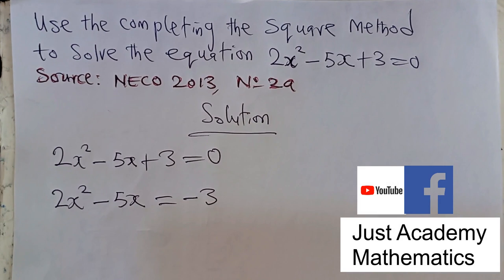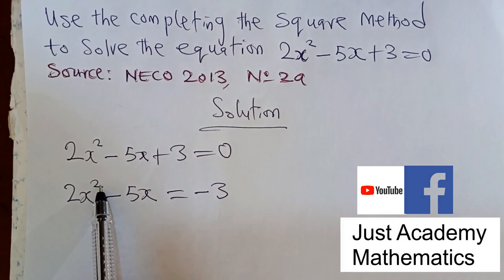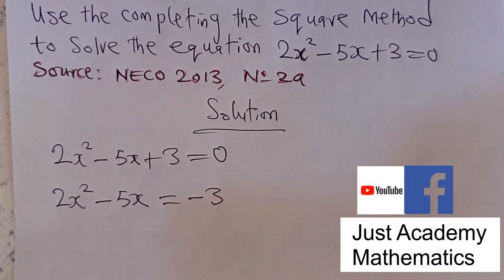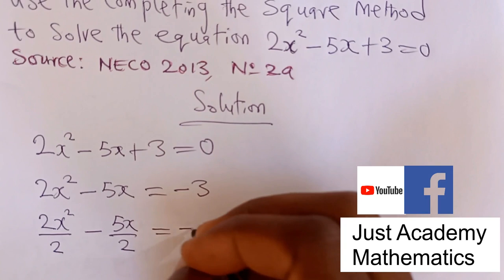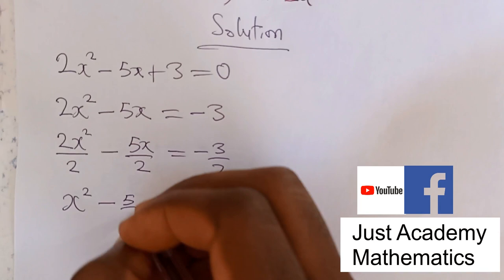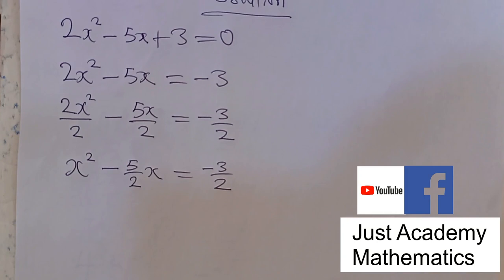Having done that, the next step is to divide through — not just both sides, but divide through by the coefficient of x². The coefficient of x² here is 2, so we divide every term by 2. This gives us x² - (5/2)x = -3/2.